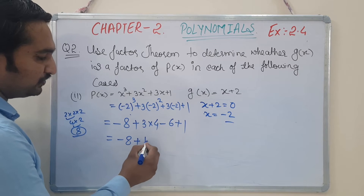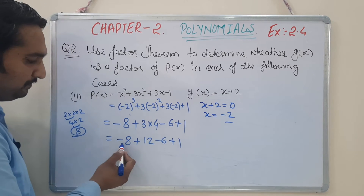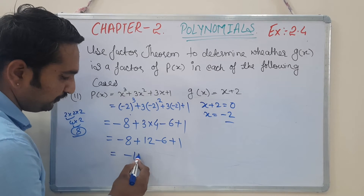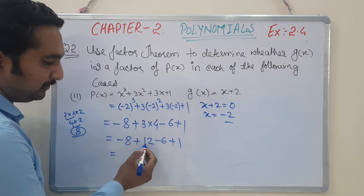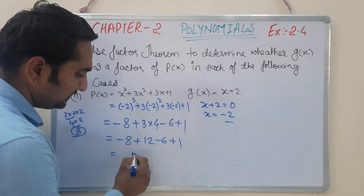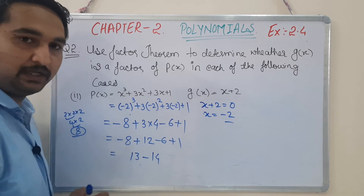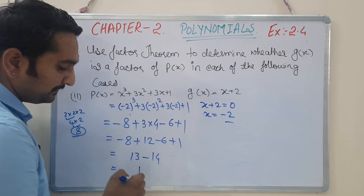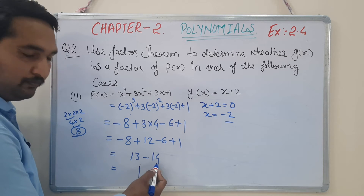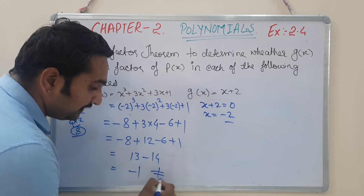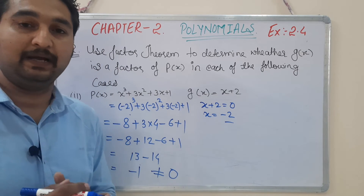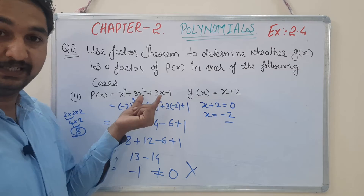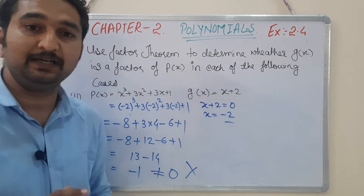So we have: -8 + 12 - 6 + 1. Adding the positives: 12 + 1 = 13. Adding the negatives: 8 + 6 = 14. Now 13 - 14 = -1. It is not equal to 0. Since the final answer is not 0, we say that g(x) is NOT a factor of p(x).